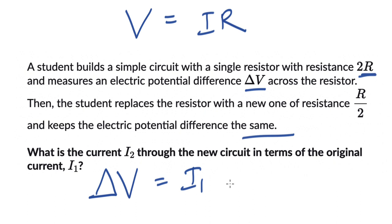This is equal to I₁ × 2R. And in the second case, the potential difference remains the same, so this is equal to I₂. We don't know what I₂ is, but we do know that the resistance was halved: I₂ × R/2. So here R gets cancelled, and when we express I₂ in terms of I₁, we get I₂...